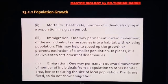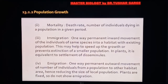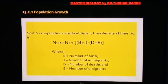Immigration — the one-way permanent inward movement of organisms from another population — is considered to speed up population growth. In plants, immigration is absent. The fourth factor is emigration: the one-way permanent outward movement out of a population. Plants do not show emigration since they cannot move from their place.